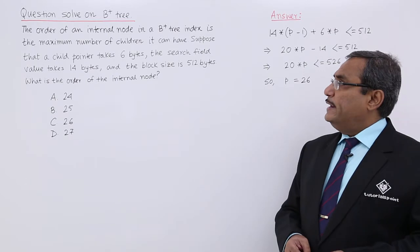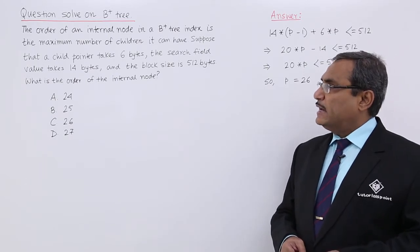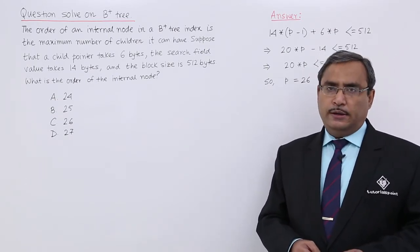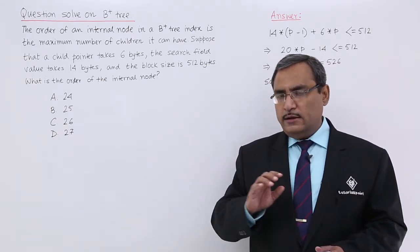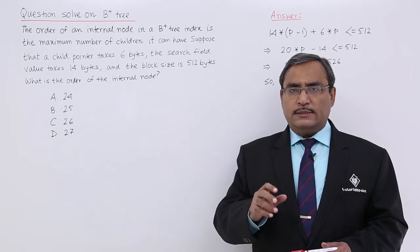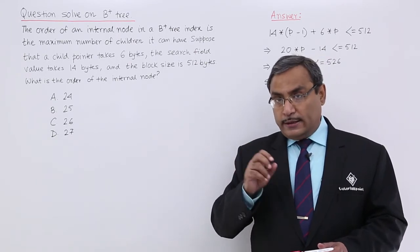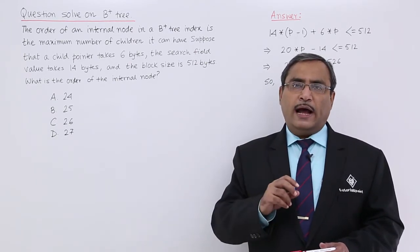The order of an internal node in a B plus tree index is the maximum number of children. You know that we are having two kinds of nodes in our B plus tree. One node at the internal nodes, also known as the index nodes, and there are some other nodes which will be found at the leaf nodes.